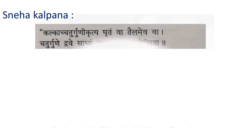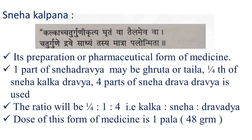Then Sneha Kalpana. The definition is: Kalka Chaturkuni Grutte — one part of Sneha Drava, one-fourth part of Kalka Drava, and four parts of Drava Drava are used. The general ratio of Kalka : Sneha : Drava Drave is one-fourth to one to four. When this proportion is used in preparation, the formulation is called Sneha Kalpana and the general dose is one Pala.